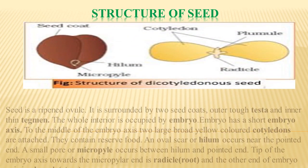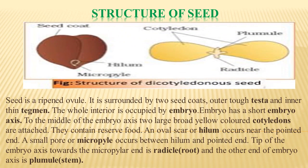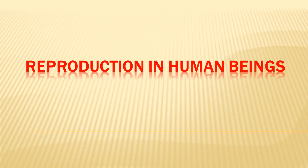The seed is a ripened ovule surrounded by two seed coats: an outer tough layer called testa and an inner thin layer called tegmen. The interior part is the embryo, which has a short embryo axis. In the middle of this axis are two large broad yellow-colored structures called cotyledons, which contain reserved food material. There is a hilum near the pointed end and a small micropyle between the hilum and the pointed end. The tip of the embryo axis towards the micropylar end is the radicle, which develops into the root system, and the other end is the plumule, which develops into the stem.